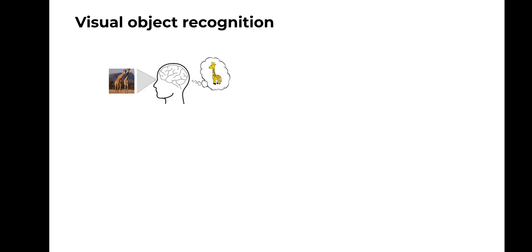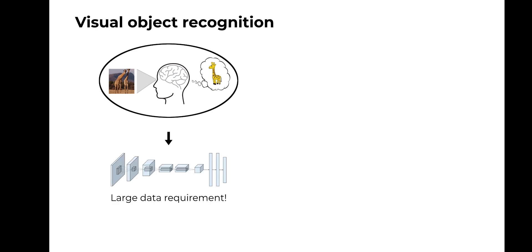In our everyday life, we can effortlessly recognize different objects present in visual scenes in just a fraction of a second. This capability is called visual object recognition and is made possible through complex nonlinear transformations occurring in the visual brain. To predict and explain these transformations, computational neuroscientists more and more employ machine and deep learning modeling techniques.